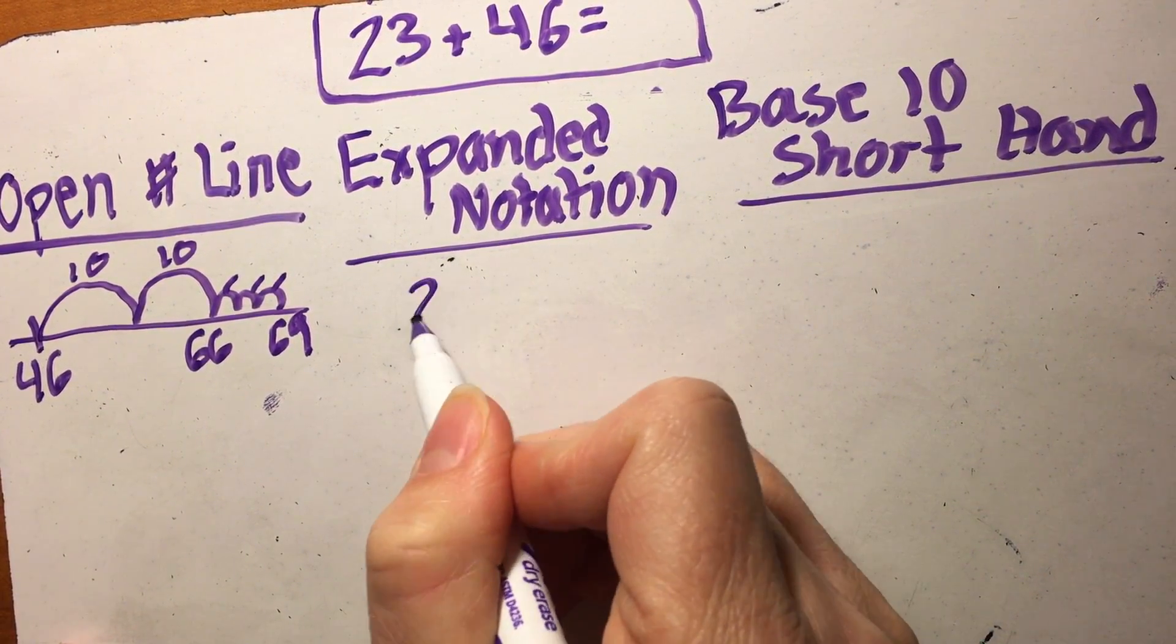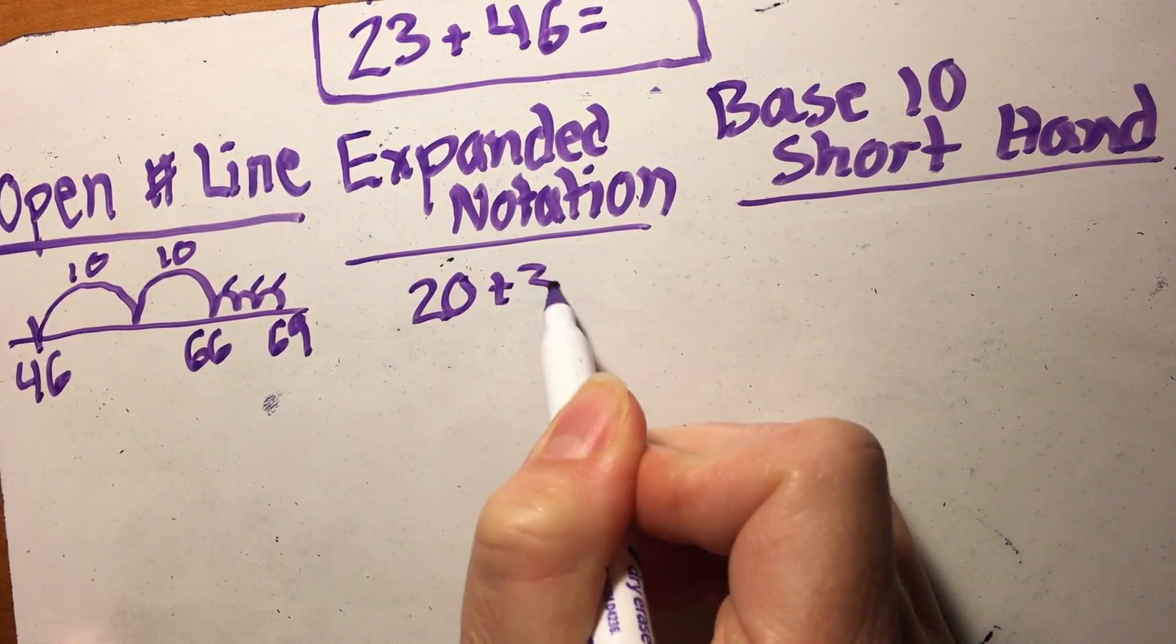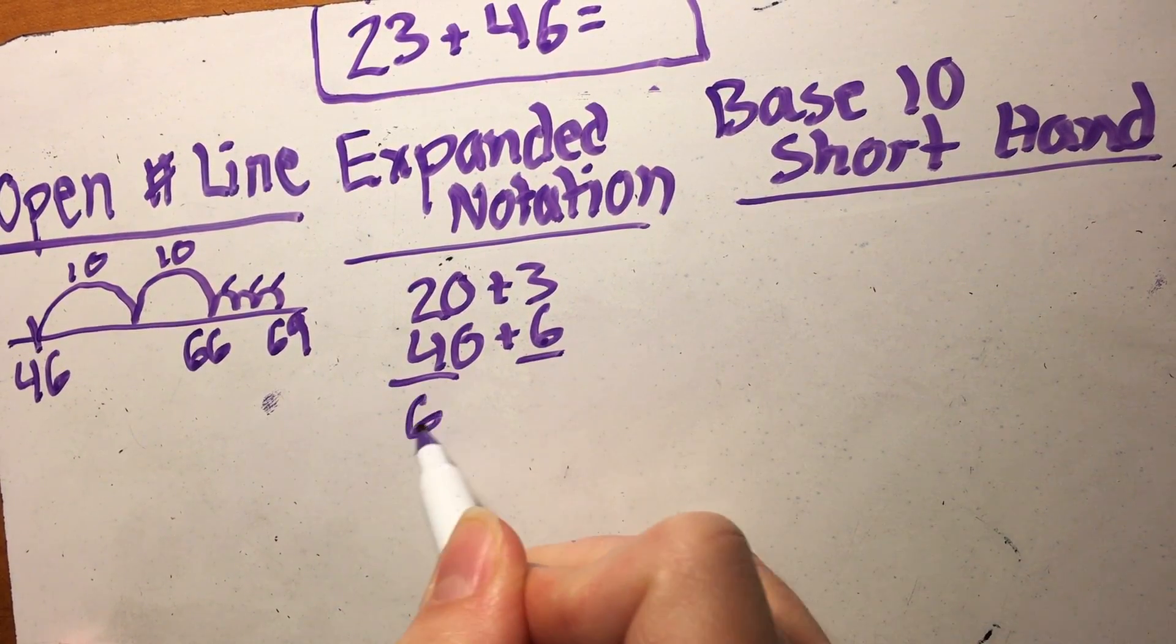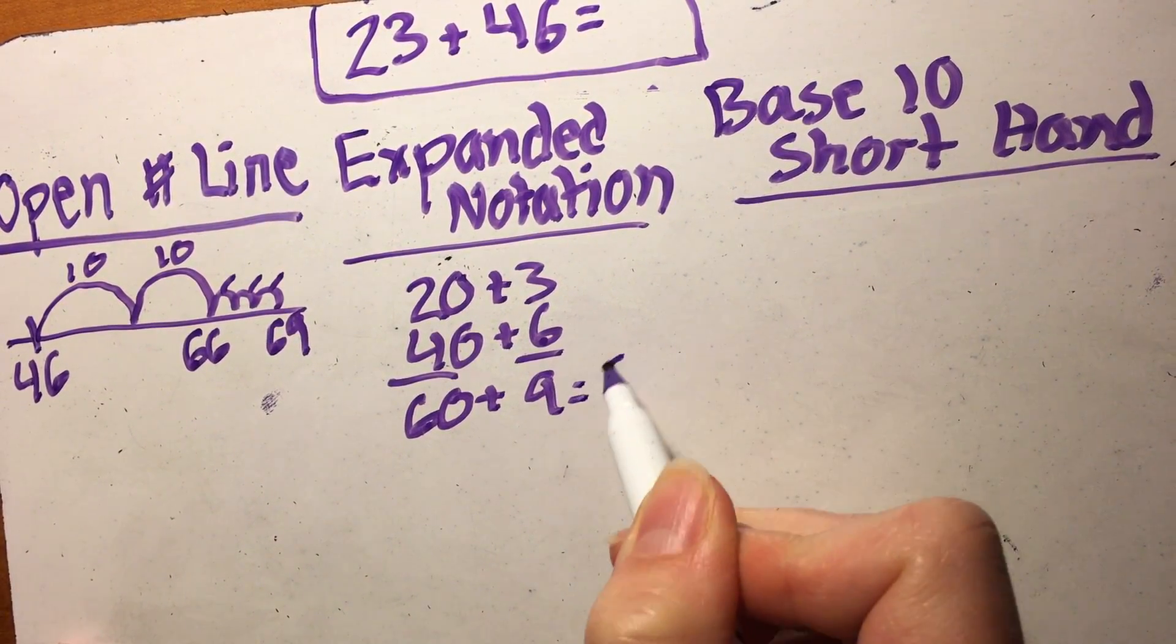Again in expanded notation, I'm going to pull those numbers apart. 23: 20 plus 3. 46: 40 plus 6. 20 plus 40 is 60. 3 plus 6 is 9. Therefore my answer is 69.